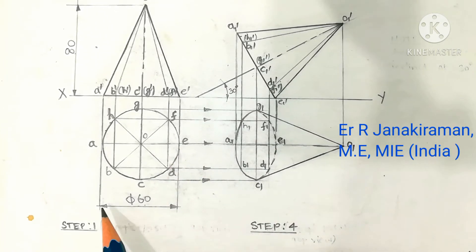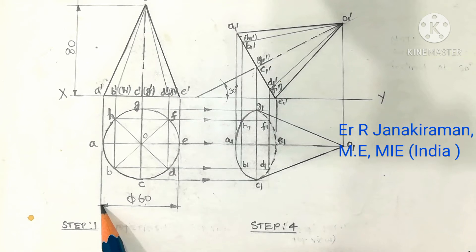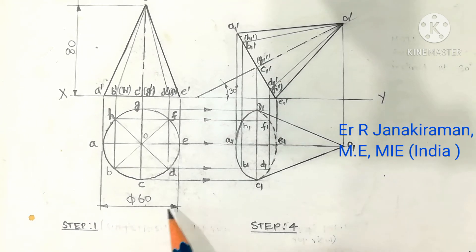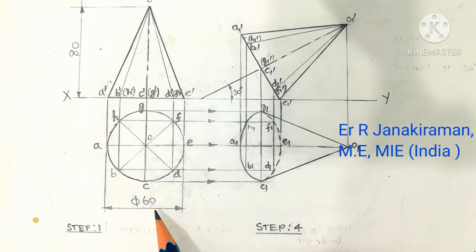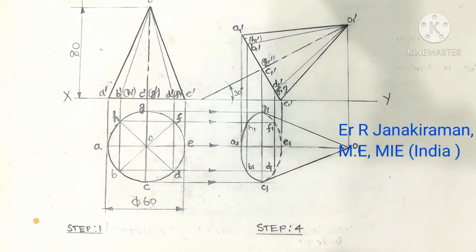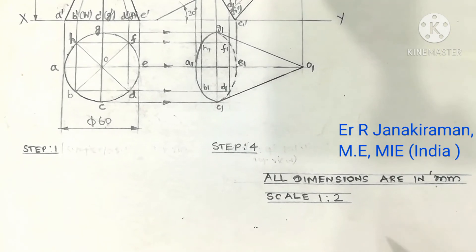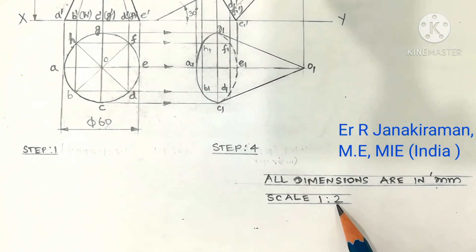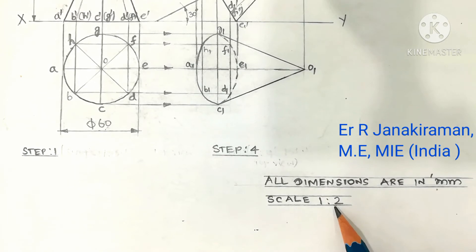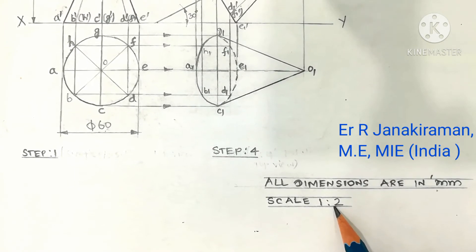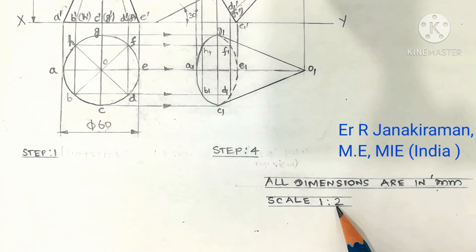But in actual size, if you measure the size, it will be half because I follow the reduced scale. Scale followed is 1 is to 2. This is half size. Suppose full scale, you have to write it as 1 is to 1 as per full scale. This is reduced scale followed by half of the size.